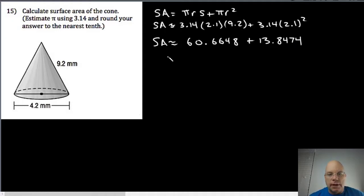I get surface area approximately 74.5122 ten-thousandths. But rounding to the nearest tenth again, so 74.5 millimeters squared. Surface area—we're talking about the two-dimensional space on the surface, so that's squared.